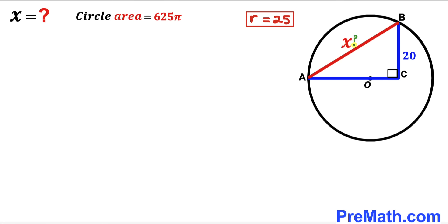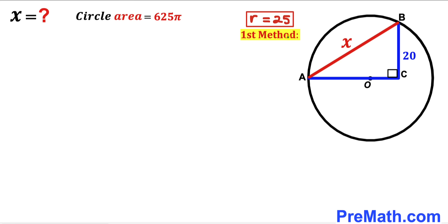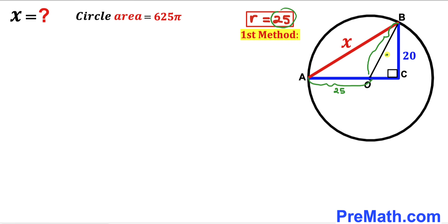Now our task is to find the value of X. If we can find the length of side AC, we can apply the Pythagorean theorem to figure out X. So our first task is to find AC. Using Method 1, we connect center O with vertex B. This gives us right triangle OBC. Note that AO and OB are both radii of the circle, so each equals 25 units.